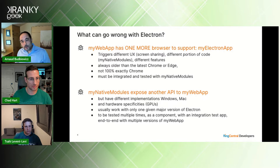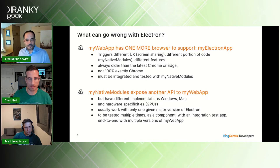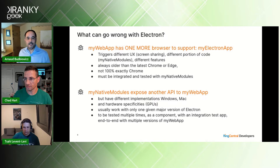Your web app has one more browser to support. In the case of our desktop client, it triggers a different screen sharing implementation — different portions of code, different features. This browser is always older than the latest Chrome or Edge, and it must be integrated and tested with our native modules. Your native modules expose one API to your web app but have different implementations on Windows vs. Mac, with hardware specificities like GPUs.